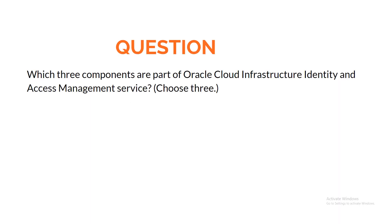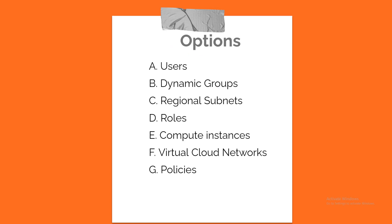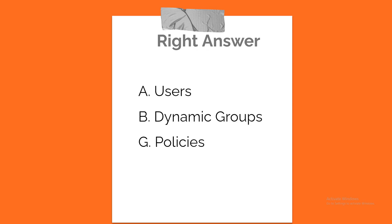Question. Which three components are part of Oracle Cloud Infrastructure Identity and Access Management Service? Choose three. A. Users. B. Dynamic Groups. C. Regional Subnets. D. Roles. E. Compute Instances. F. Virtual Cloud Networks. G. Policies. Correct answer: A. Users. B. Dynamic Groups. G. Policies.